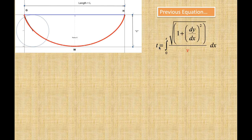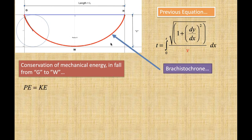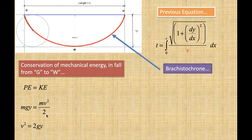Time is equal to the integral from 0 to s of the quantity square root of one plus dy over dx squared times dx divided by velocity v. The velocity comes from conservation of mechanical energy: potential energy equals kinetic energy, so mgy equals mv squared over two. Both masses cancel, giving velocity squared equals 2g times y, and therefore velocity equals the square root of 2gy.